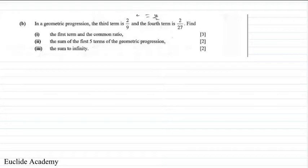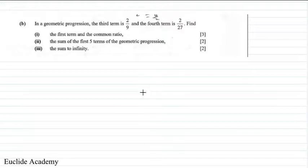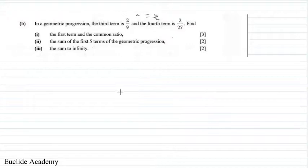Let us go through examples on arithmetic and geometric progression. These are questions extracted from past papers. The geometric progression question always comes in Paper Two, and in Paper One you have arithmetic progression. Today we're going to go through lots of examples to fully understand the lessons.